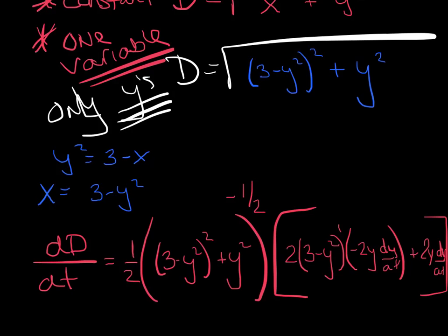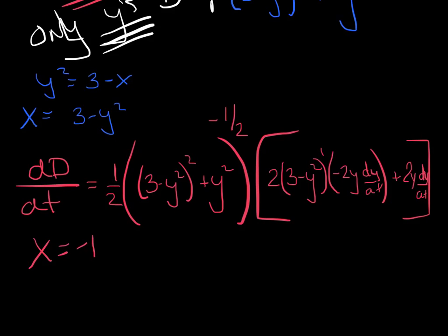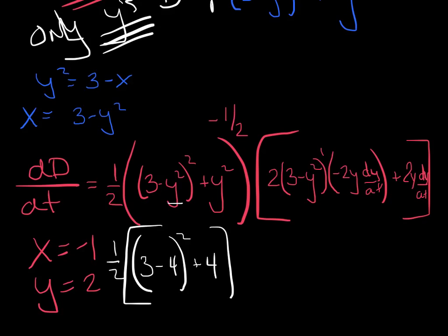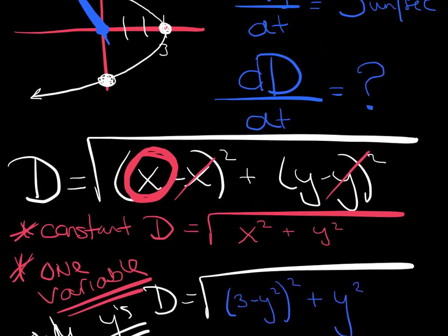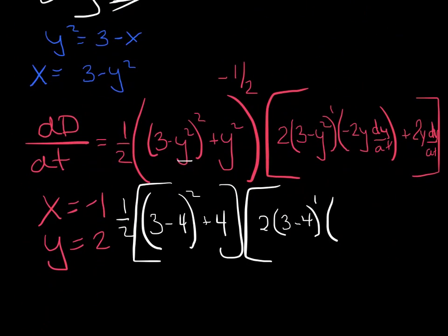And now, at this point, it's just plug and chug. They told us specifically at that point, so recall that X equals negative 1, Y equals 2. And, let's see, my question, I knew dy/dt, so I would just have one-half, three minus, let's see, two squared is going to get me four. Oops, it's that quantity, squared plus four, my Y squared, times, two times, let's see, three minus four to the first, times negative two times two dy/dt. Shucks, what was that? dy/dt was three. So that's negative four times three plus two times two times three.